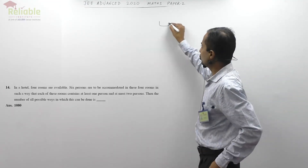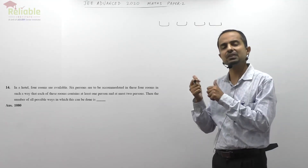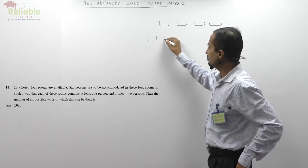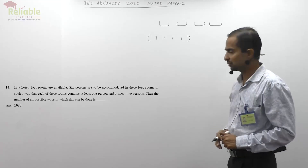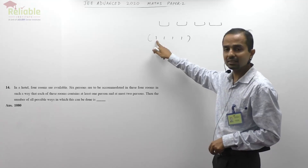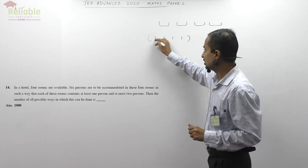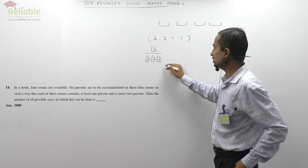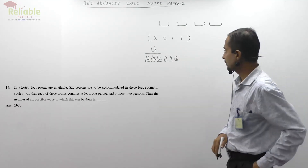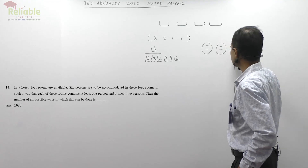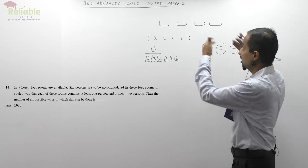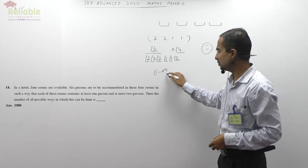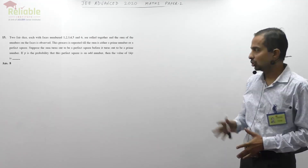Question 14 comes from permutation — it is also an easy one. There are four rooms and six persons; we distribute them such that each room has at least one and no room has more than two. First give 1 each to all four rooms, consuming four persons; two are left. The only valid grouping is 2,2,1,1. Group them with corrective factor 2! × 2! × 1! × 1!, then arrange in 4! ways to get the required answer — easy to moderate.